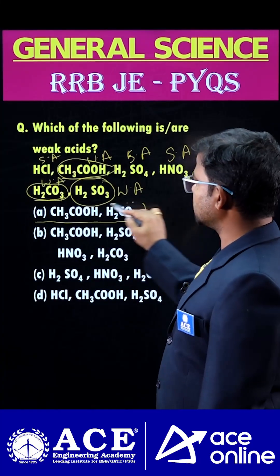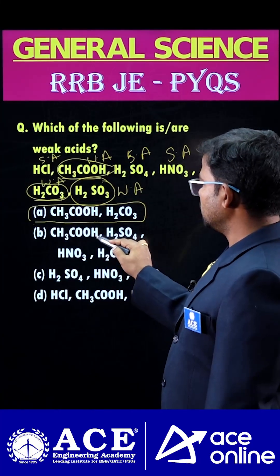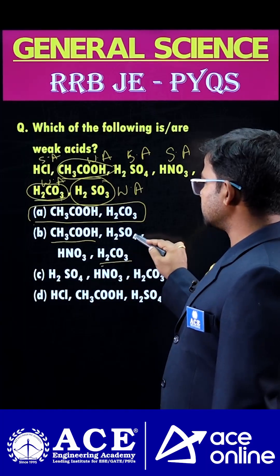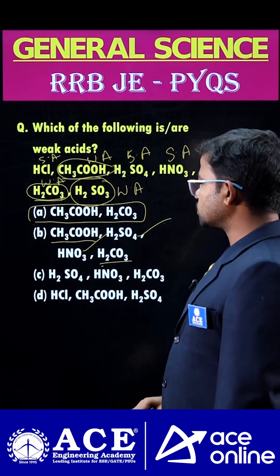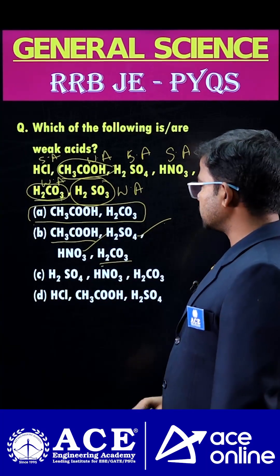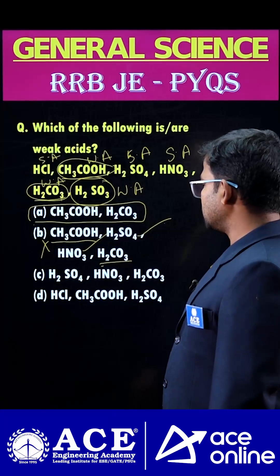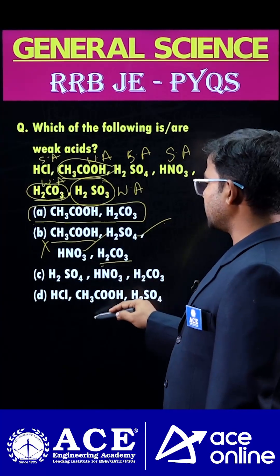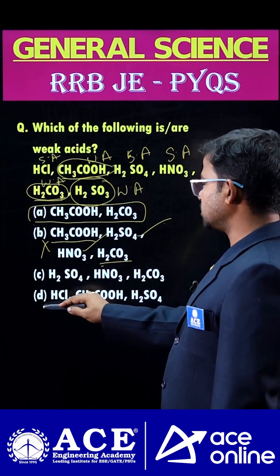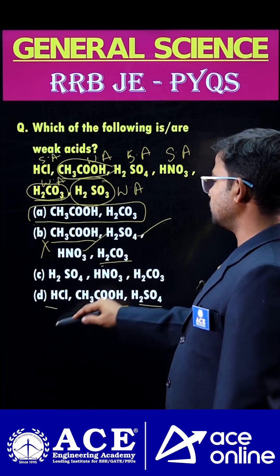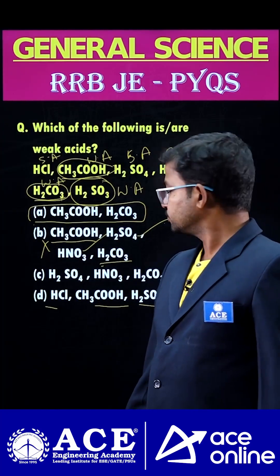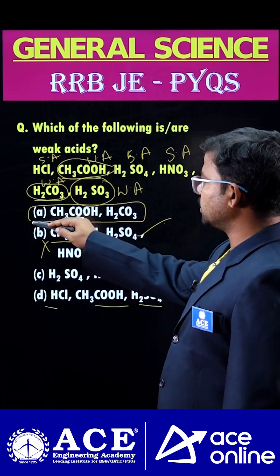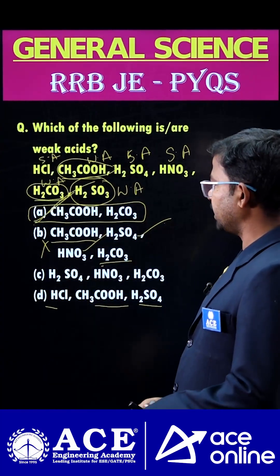Here option A is the correct one. Why? Because in option B, we have acetic acid and carbonic acid, but along with those, strong acids are also present — that is why B is not correct. In option C, both strong and weak acids exist. In option D, same thing — both strong and weak acids are present. So the correct answer is option A.